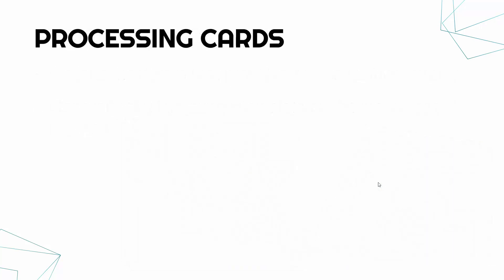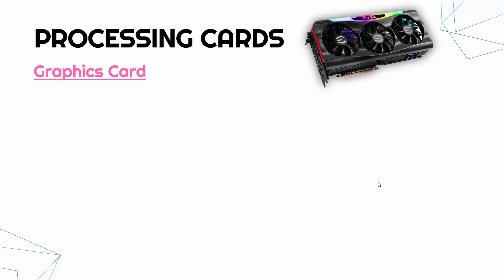Let's start by talking about a couple of cards which add processing functionality. The most obvious one is a graphics card. A graphics card can be quite fancy looking, or quite plain as well. As you get more expensive models, they tend to add lights and lots of fans and get quite bulky. You can see the PCI slots poking out at the bottom.